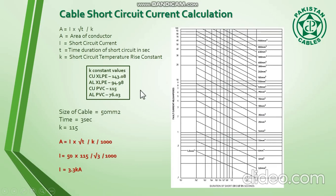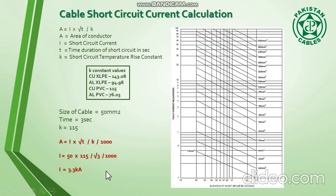Now we can calculate using the formula and verify if this is correct. We rearrange the formula and measure the area of the conductor, which is 50mm², multiplied by 115 — 115 is the constant K value for copper PVC. We divide by root T, where T is 3 seconds, so we have root 3, divided by 1000 to convert units.